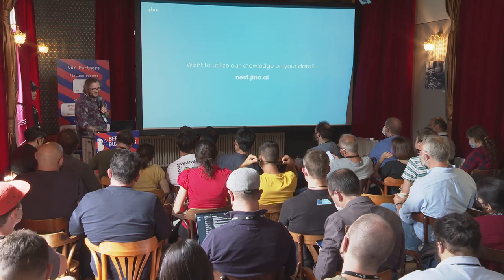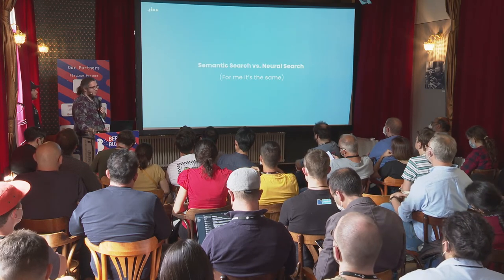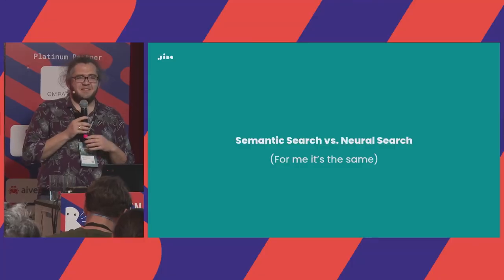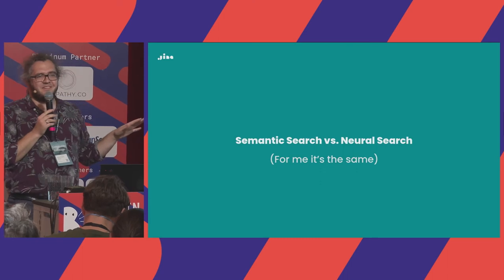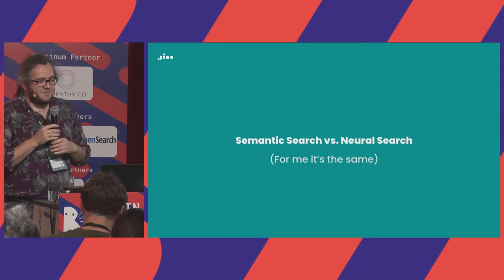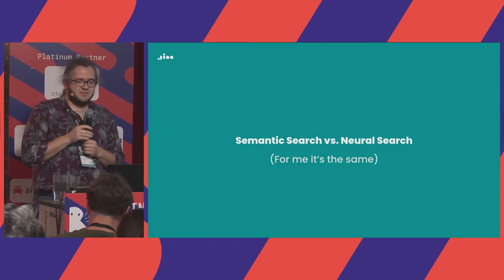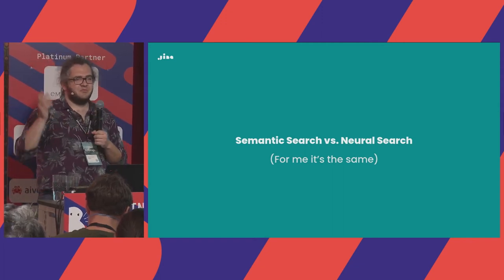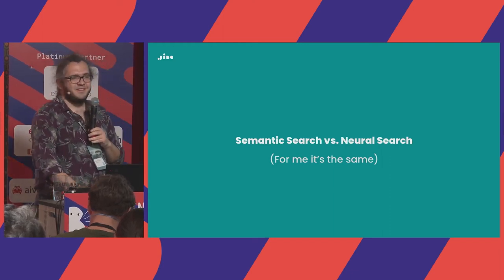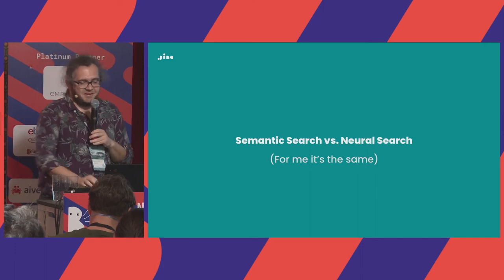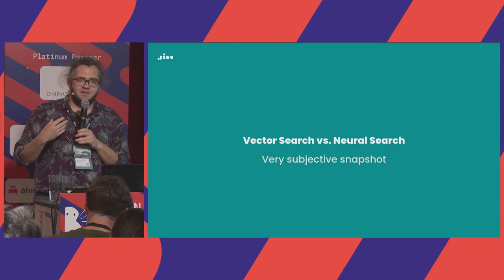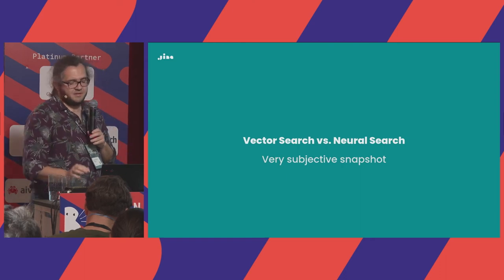Now back to the buzzwords — this is very subjective and represents how I currently see the world, which might change in three to six months. For me, semantic search and neural search are more or less the same thing. When we founded our company two years ago we wanted a new buzzword, so we created 'neural search' — it means the same as semantic search.